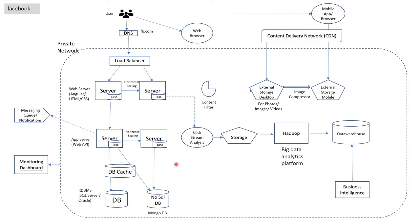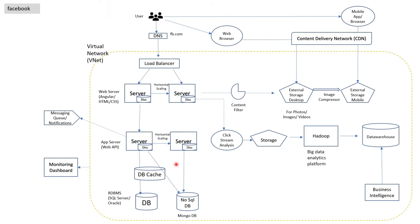This is all about the architecture of an application which is mostly similar across all other big applications. If you understand this, then it is very easy to understand Azure services. So let's start replacing all the on-premise services with Azure services. In Azure, the private network will be replaced by virtual network, which we also call VNet.